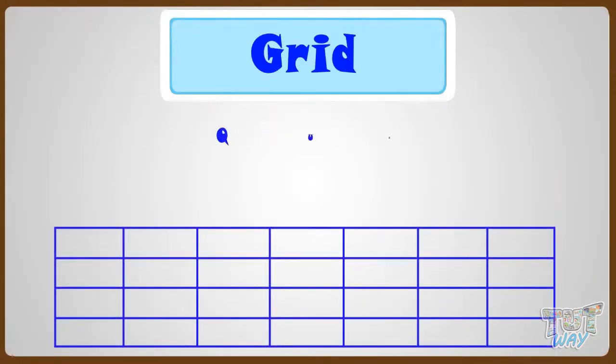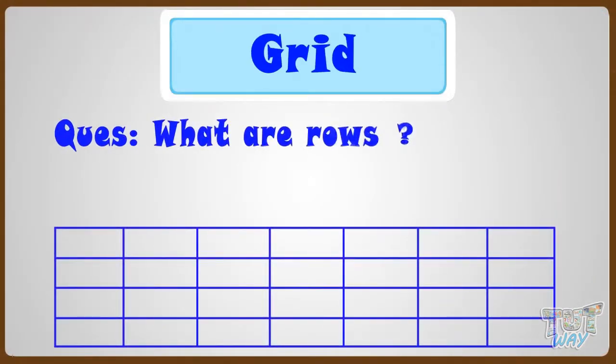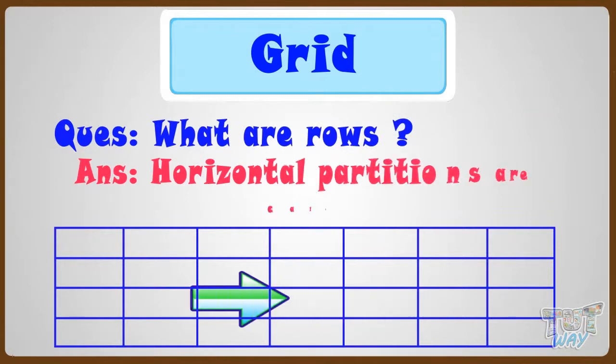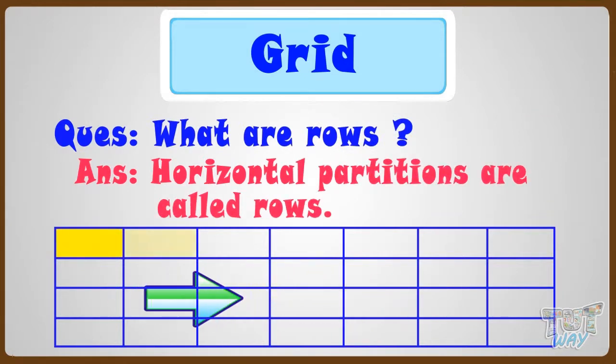Here is a grid. Let's see what are rows. The horizontal partitions in the grid, like this, are called rows of the grid.